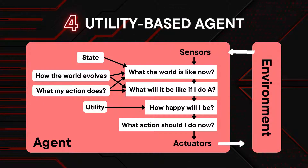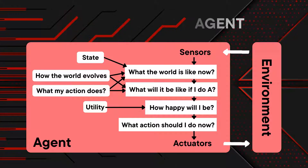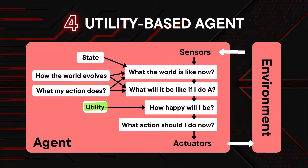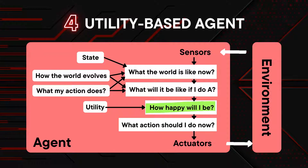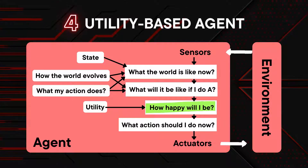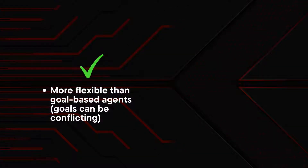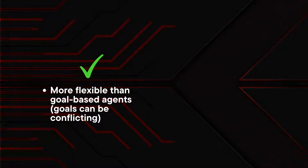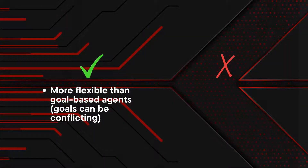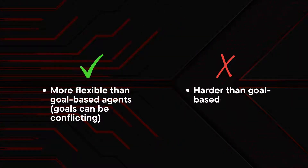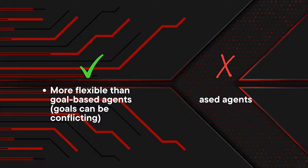A utility-based agent uses a model of the world along with a utility function that measures its preferences among states of the world. Then it chooses the action that leads to the best expected utility. The benefit is that it is more flexible than goal-based agents, as goals can be conflicting. However, it is much harder to implement than goal-based agents.